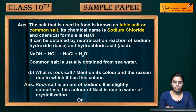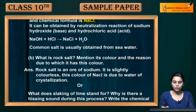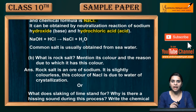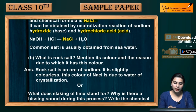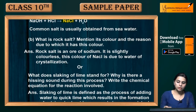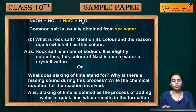Its chemical name is sodium chloride and its chemical formula is NaCl. It can be obtained by a neutralization reaction of sodium hydroxide, which is a base, and hydrochloric acid, which is an acid. Whenever a base and acid react, they produce salt plus water — in this case NaCl plus water. Commonly, common salt is obtained from sea water.